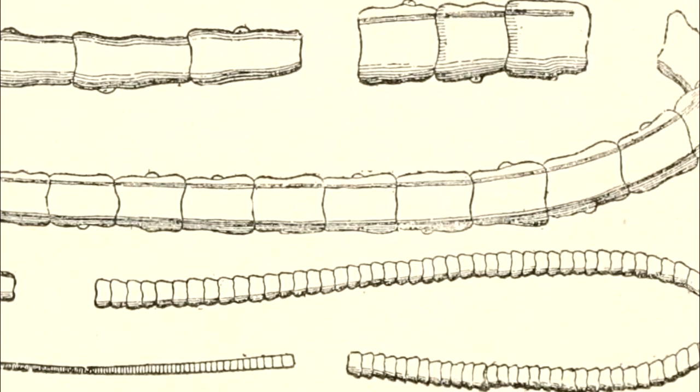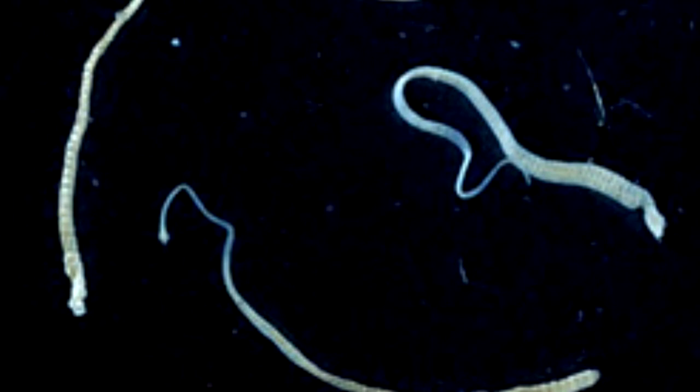Tapeworms are hermaphroditic, and are generally able to self-fertilize. But they can also cross-fertilize with another member of their species if found within the same body.